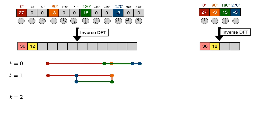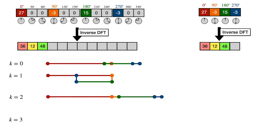For k equals 2, we rotate each rod by two times 30 degrees: a rod of length 27, two zero rods, then minus 3 rotated 180 degrees goes to the right, two zero rods, then a rod of length 15, then minus 3 rotated 180 degrees again — and we end up at 48. So 48 is the third entry. For k equals 3, it looks a lot like k equals 1 but turned upside down, and we again end up at 12. So the first four entries of the inverse DFT of the pivot sequence are 36, 12, 48, 12.